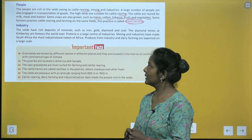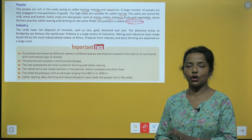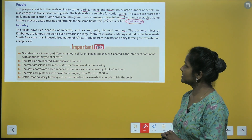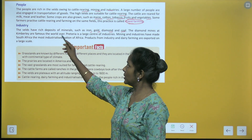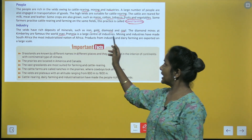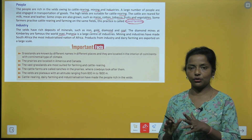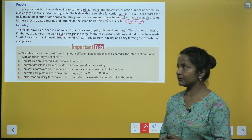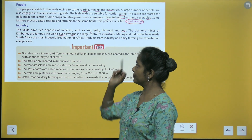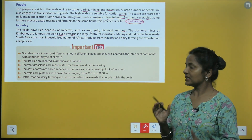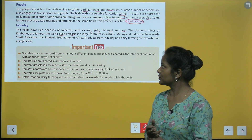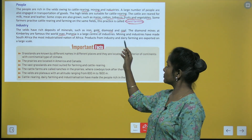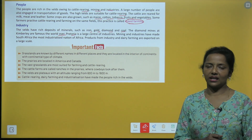Industry: the velds have rich deposits of minerals such as iron, gold, diamond and coal. The diamond mines at Kimberley are famous the world over. Pretoria is a large center of industries. Mining and industries have made South Africa the most industrialized nation of Africa. Products from industry and dairy farming are exported on a large scale.